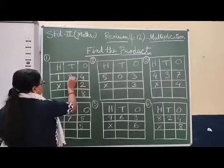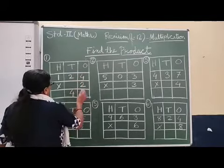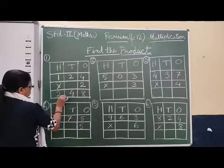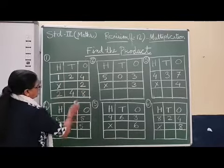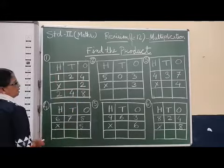Two times two, then next space. Two times two, four. Okay? Then hundred's place, two times one, two. So two hundred forty-eight is the answer. First one's place, then ten's place, then hundred's place.